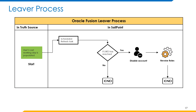The Leaver process starts with the last working day attribute of the account being populated in the truth source application. That last working day for that account is then updated in SailPoint through a scheduled aggregation task. Through a scheduled refresh identity cube task, it is checked that if the last working day is equal to today's date — in other words, if the last working day has been reached. If it has, then the account disabled process for Oracle Fusion application gets triggered. As part of the termination process, all the roles which that account has will be deprovisioned.